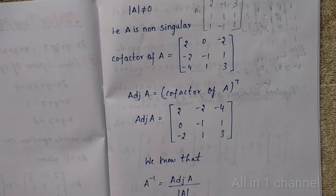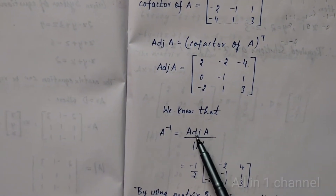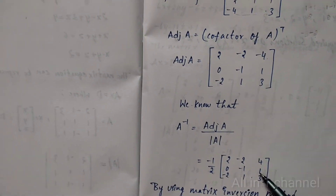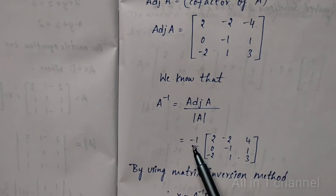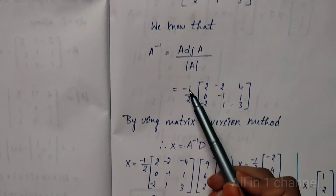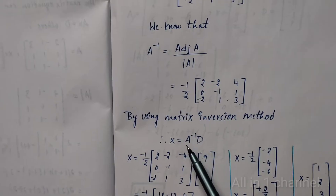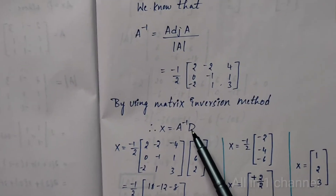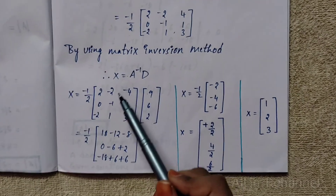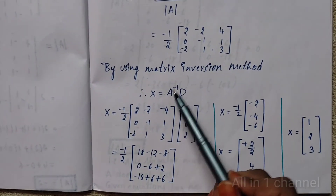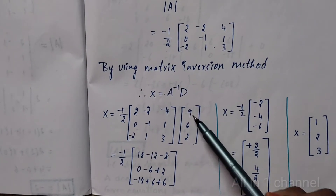We know that A inverse equals adjoint A divided by det(A). The adjoint A is the transposed cofactor matrix. Det(A) we got as minus 2. So A inverse equals minus 1 by 2 times the adjoint matrix. By using the matrix inversion method, X equals A inverse into D, where D is the constants matrix [9, 6, 2].